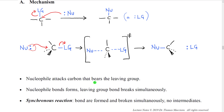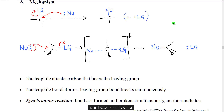The nucleophile attacks the carbon that has the leaving group. The nucleophile bond forms and the leaving group bond breaks simultaneously, so this is an example of what we call a synchronous reaction. A synchronous reaction is a reaction where bonds are formed and broken simultaneously, and we proceed directly from reactant to product in one elementary reaction — we have no intermediates.